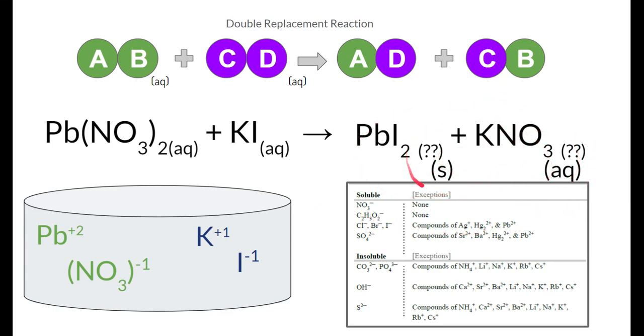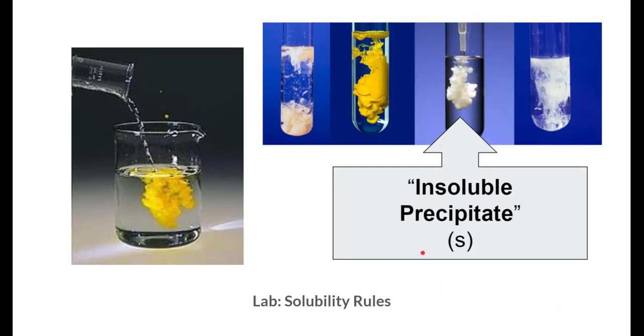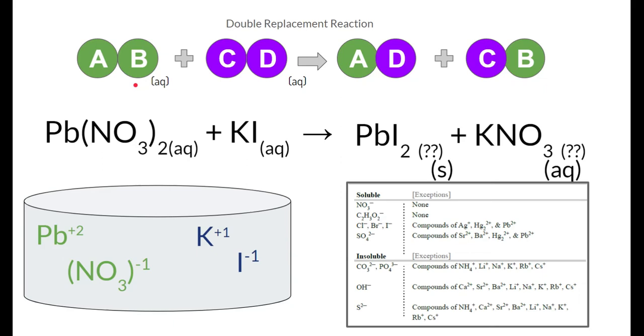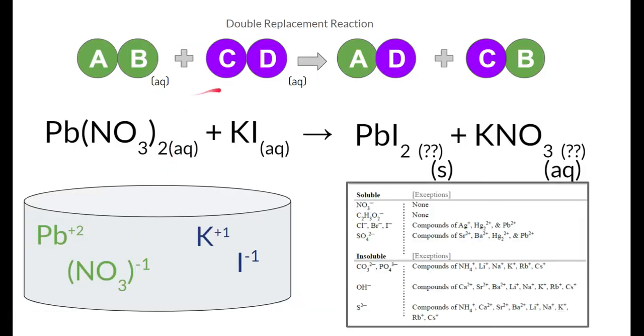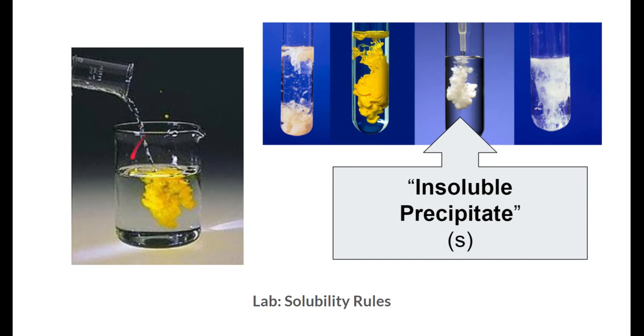Well, we did a lab earlier on called the Solubility Rules Lab. Take a look over here at the left-hand side. Here we have our first mixed substance. If we go back to our example, that could be like lead-to-nitrate. Down here, there's some clear substance as well. That's like our potassium iodide. Now they're being mixed. Notice this clear substance is meeting this clear substance. And look, in the middle, we see this yellow substance seemingly magically appear out of nowhere.